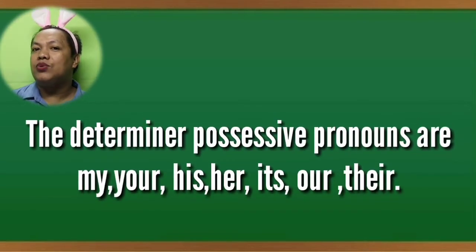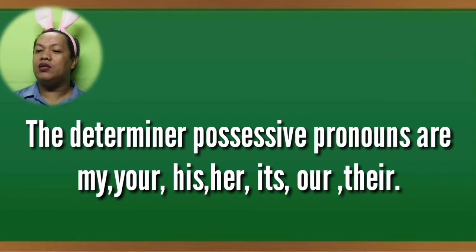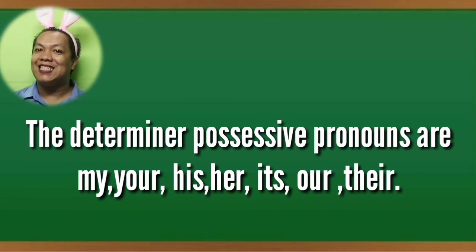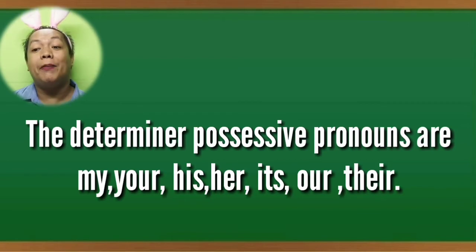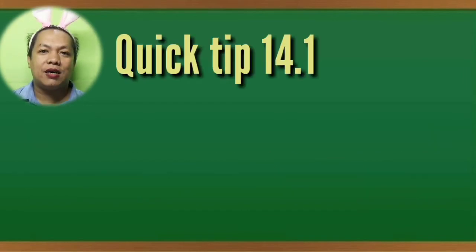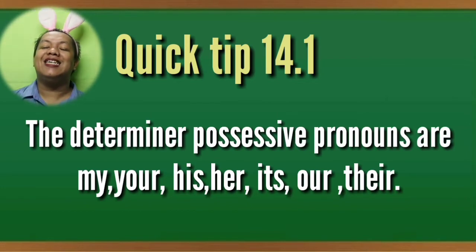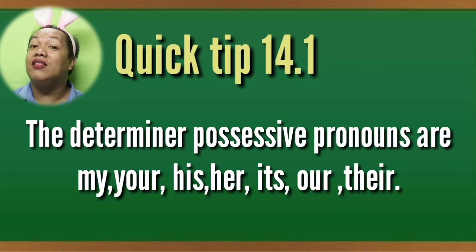The determiner possessive pronouns include: 'my' — as in 'my house'; 'your' — you're the owner; 'his' — he's the man; 'her' — her mother is beautiful; 'its' — it's Christmas season; 'our' — our family is a Christian family; and 'their' — their family background is a wealthy family. English Quick Tip 14.4 reminds you of these seven determiner possessive pronouns.